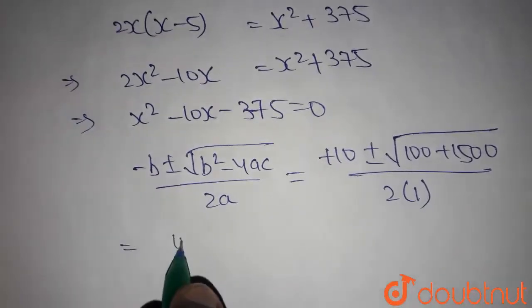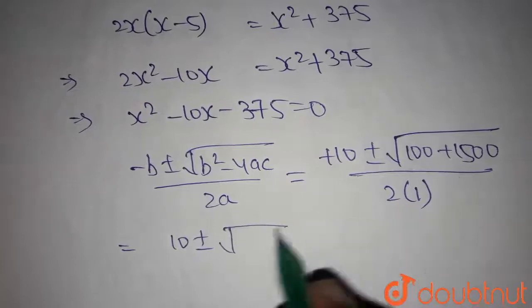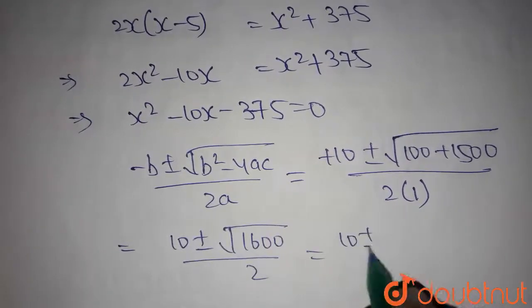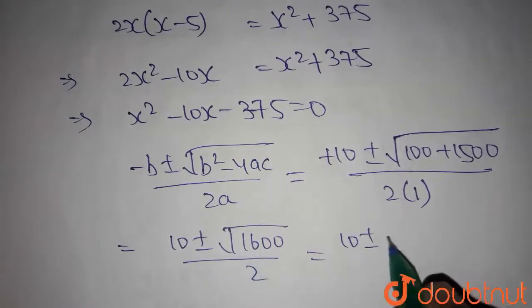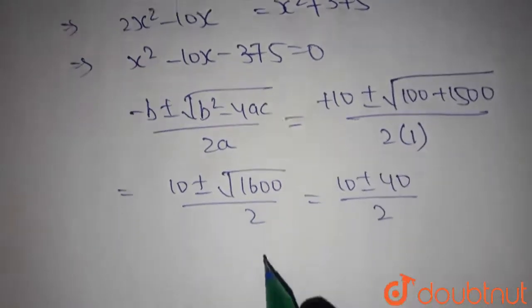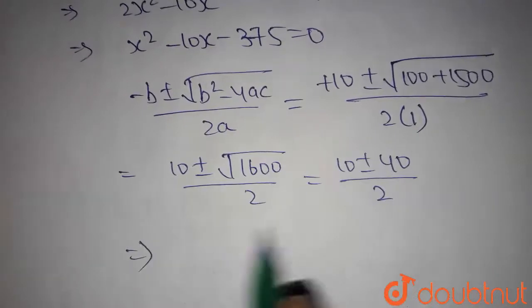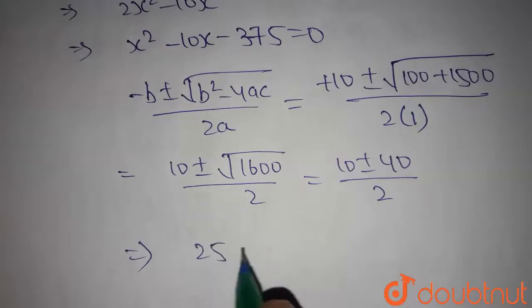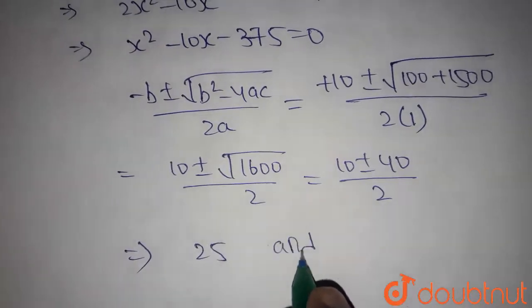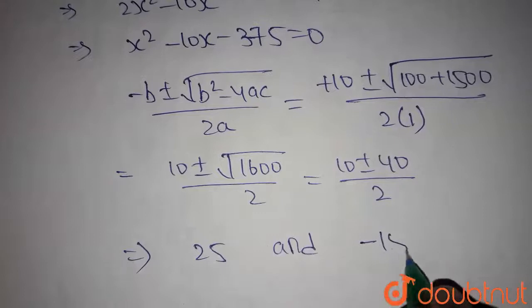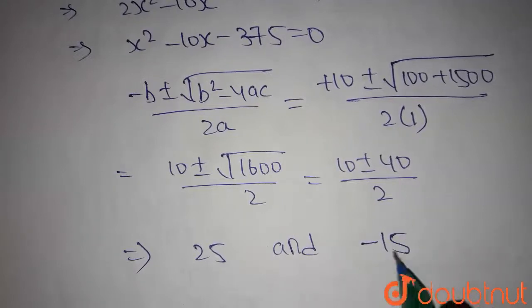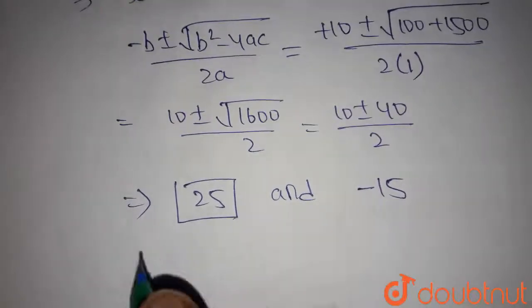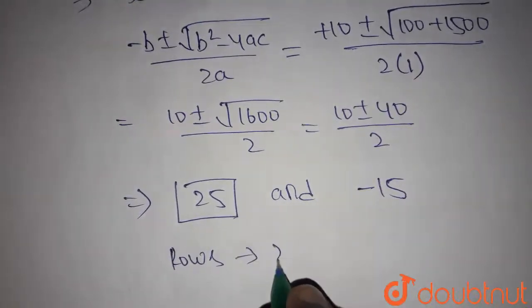So here we get 10 plus or minus root over 1600 divided by 2 which is 10 plus or minus 40 divided by 2. So we get if we take positive, 10 plus 40 by 2 which is 25 and 10 minus 40 by 2 which is minus 15. So x cannot be a negative value, x must be positive. So the number of rows initially is 25.